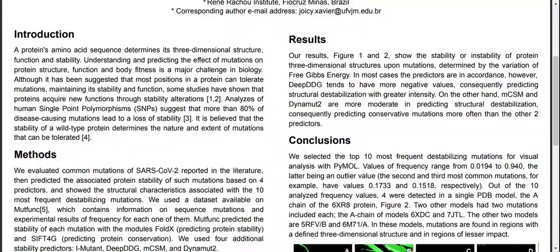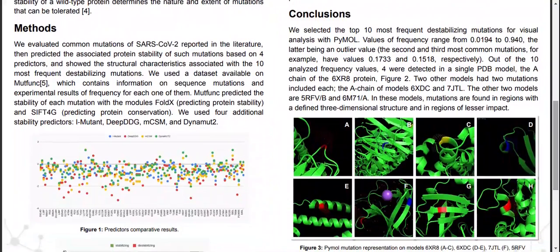So, in this work, we evaluated the most common mutations of SARS-CoV-2 that are reported in the literature, and then predicted the associated protein stability based on four predictors.